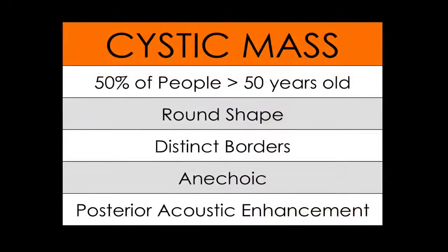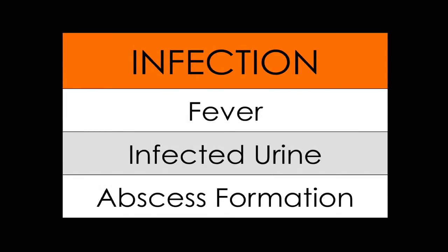Cystic masses are very common and are present in 50% of people over the age of 50. Their characteristics on ultrasound include a round shape with distinct borders, completely anechoic with no internal echoes, and the ability to cause posterior acoustic enhancement. Although benign and common, renal cysts can become infected and will manifest clinically with fever, infected urine, and abscess formation.